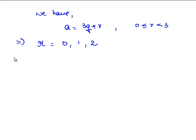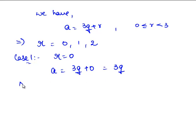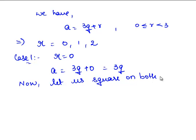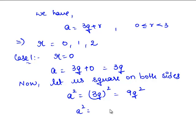Therefore, let us first take r is equal to 0. This implies a is equal to 3q plus 0, which is equal to 3q. Now let us square on both sides. Therefore, a squared is equal to 3q whole square, which is 9q squared. 9q squared can be written as 3 times 3q squared. So this is of the form 3m, where m is equal to 3q squared.